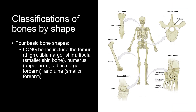Classification of bones by shape: The first type of bone is the long bone. As the name suggests, these bones are longer than they are wide and are characterized by having a cylindrical shape. Long bones include the femur or thigh bone, the tibia or larger shin bone, fibula or smaller shin bone, humerus or upper arm bone, radius which is the larger forearm bone, and ulna or smaller forearm bone. Long bones play a crucial role in supporting the body's weight and enabling movement.